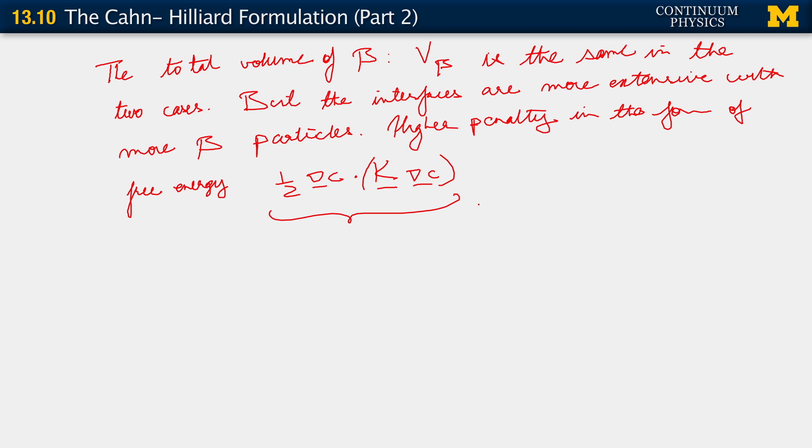The second case here, the one with the arrow, this one, has more of this type of contribution to the total free energy from the presence of interfaces. So the two cases are different. Since the tendency is for the total free energy to decrease, what happens is that the smaller particles disappear, and larger particles are formed.